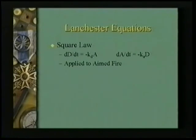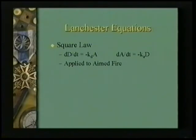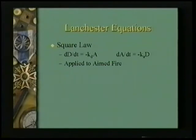In their general form, they look like this. The first law he came up with was Lanchester's Square Law. The Square Law says that the attrition against a defending unit is equal to the size of the attacking unit, multiplied by a coefficient of effectiveness, which describes how powerful or effective the weapons of the attacker are against this particular kind of defender.